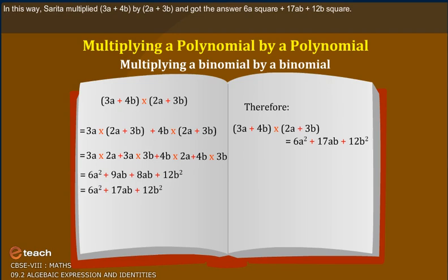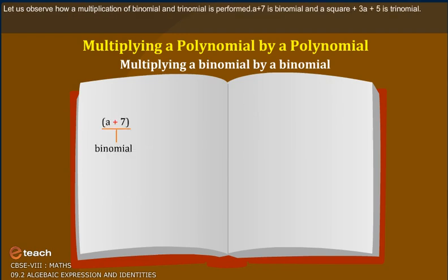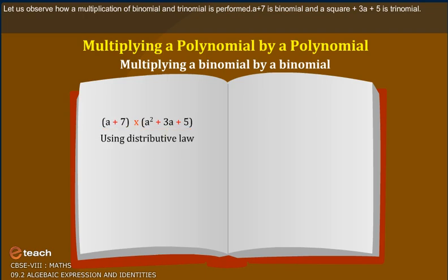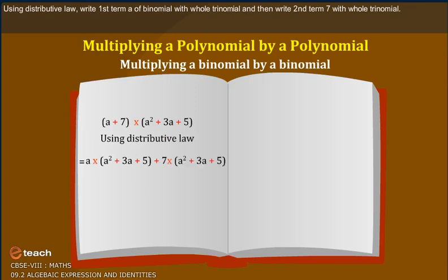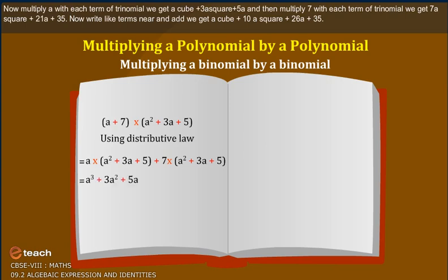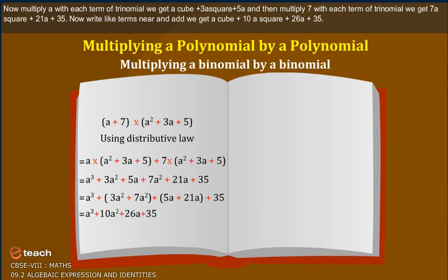Sarita multiplied 3a plus 4b by 2a plus 3b and got the answer 6a squared plus 17ab plus 12b squared. Now let us observe how a multiplication of binomial and trinomial is performed. Take a plus 7 as a binomial and a squared plus 3a plus 5 as a trinomial. Using the distributive law, write the first term a with the whole trinomial and then the second term 7 with the whole trinomial. Multiplying a with each term gives a cubed plus 3a squared plus 5a. Multiplying 7 with each term gives 7a squared plus 21a plus 35. Writing like terms together and adding, we get a cubed plus 10a squared plus 26a plus 35.